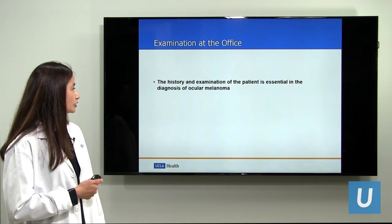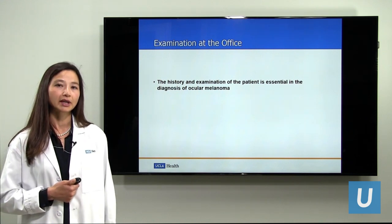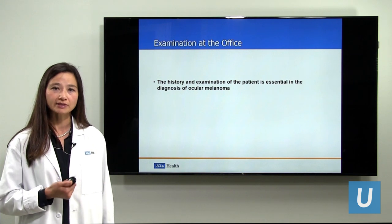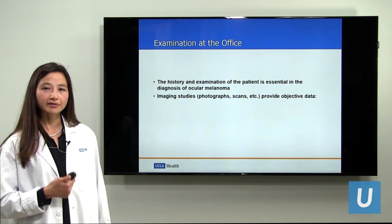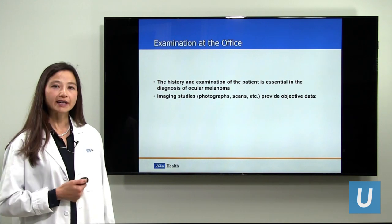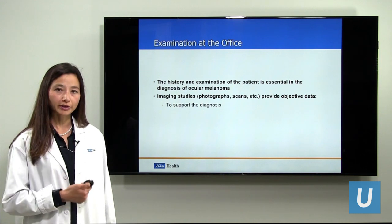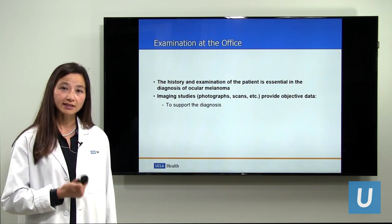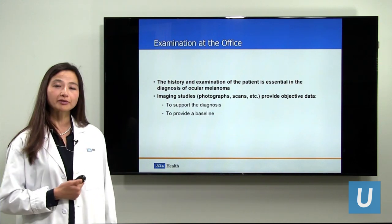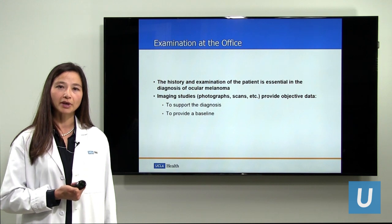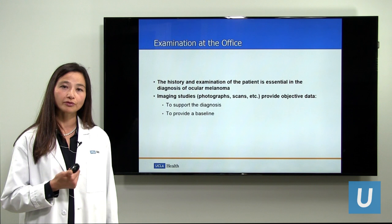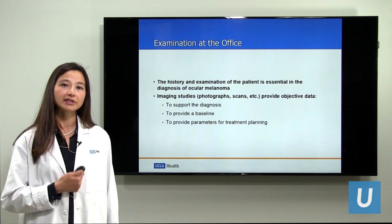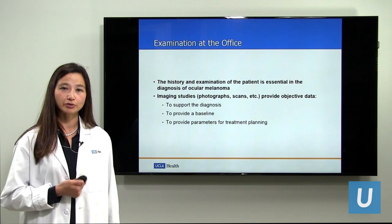The history and exam of the patient are essential in the diagnosis of ocular melanoma. When we look at a single imaging test or a single photograph, it's not always possible to tell what the answer is. Imaging studies — photographs and scans — provide objective data that help support the diagnosis. The testing also provides a baseline so that in follow-up we have something to compare with. And certainly, if the person has a melanoma, the tests provide important parameters for designing the treatment for that individual patient.